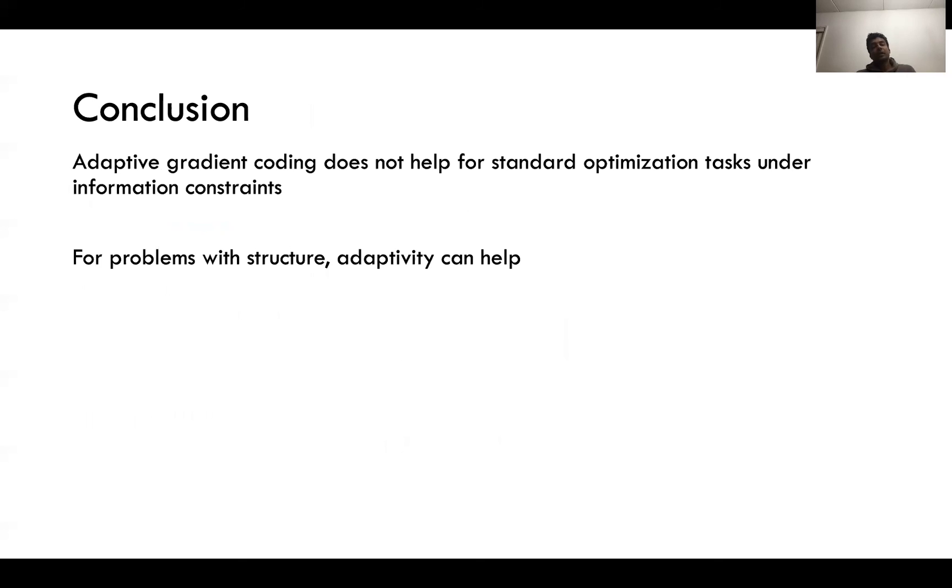In conclusion, adaptive gradient coding does not help for standard optimization tasks under information constraints such as communication or privacy. However for problems where there is structure we show that adaptivity can help. Thank you.